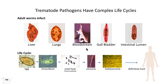Trematode pathogens have complex life cycles, and the adult worms take up life in various organs. We have a liver fluke that obviously will live in the liver. We have a lung fluke, Paragonimus, that seeks out the lung tissue and sets up home there. We have the schistosomes, which live in the bloodstream. And one fluke lives within the bile duct and feeds on epithelium, while others sit in the small intestine and feed on epithelial tissues.